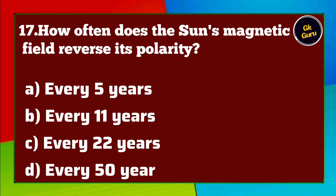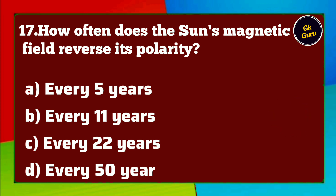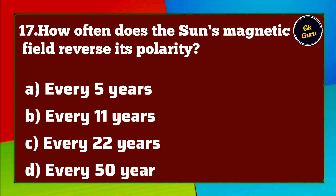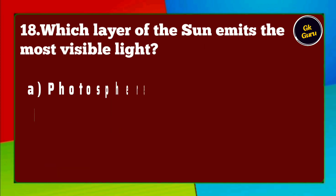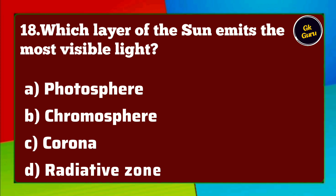How often does the sun's magnetic field reverse its polarity? A. Every 5 years B. Every 11 years C. Every 22 years D. Every 50 years. Answer B. Every 11 years.